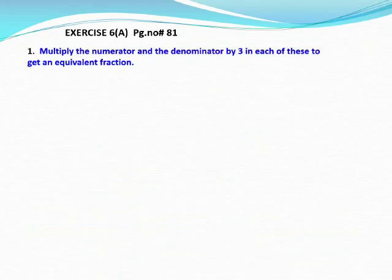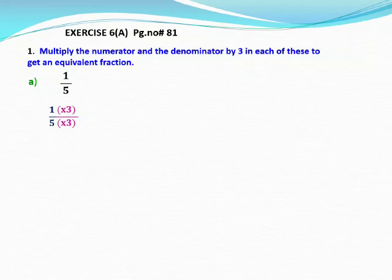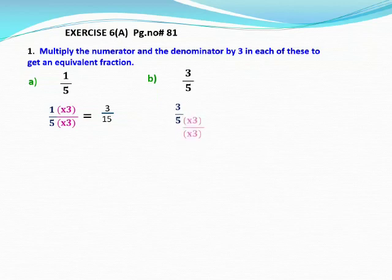See the textbook exercise 6a, page number 81. First question: multiply the numerator and denominator by 3 in each of these to get an equivalent fraction. First question is 1 by 5. We find an equivalent fraction by multiplying numerator and denominator by 3: 1 times 3 is 3, 5 times 3 is 15. So the answer is 3 by 15. See the next question: 3 by 5. Here also multiply numerator and denominator by 3: 3 times 3 is 9, 5 times 3 is 15. So the answer is 9 by 15.